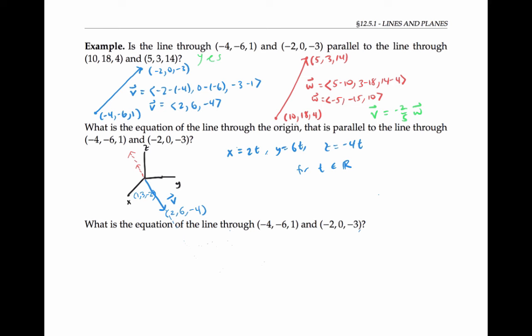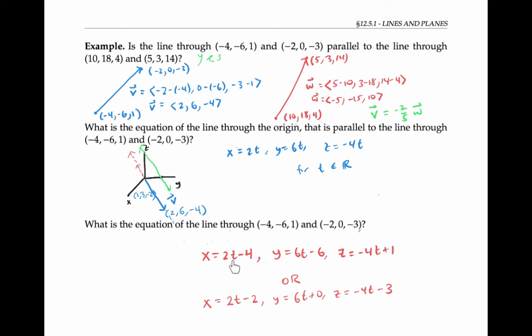This line will also be parallel to V, but it will have to be shifted off the origin to go through these two points. If I focus on one point, I see that the line will have to be shifted by negative 4 in the x direction, negative 6 in the y direction, and up by 1 in the z direction. Algebraically, we can do that shifting by subtracting 4 from the x values, subtracting 6 from the y values, and adding 1 to the z values. If I want a line through the origin parallel to V I multiply the components of V by the variable T, and if I want a line parallel to V through a particular point I do the same thing and then add the coordinates of that point. I could have used the other point and gotten another set of equivalent equations.